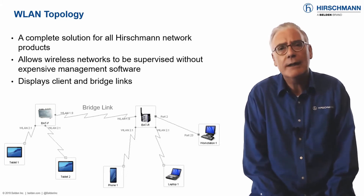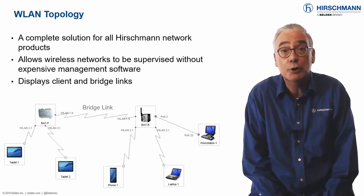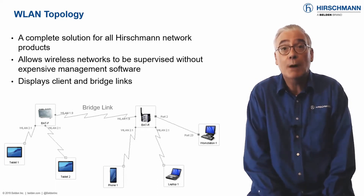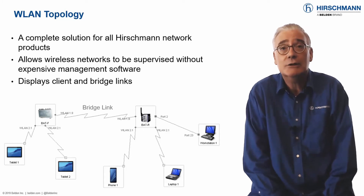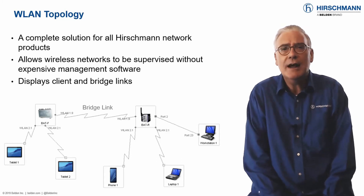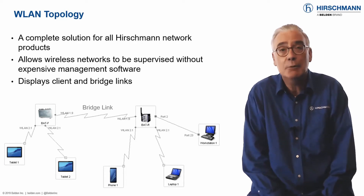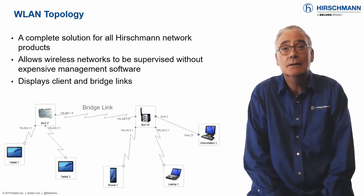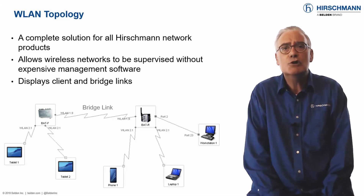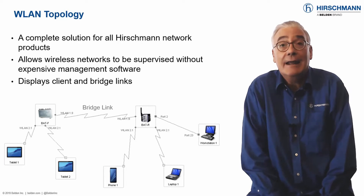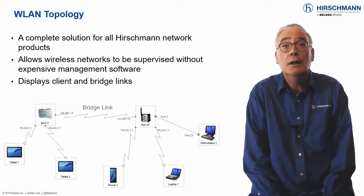Point-to-point links, also known as bridge links, behave like cables and therefore form part of the network infrastructure. Industrial HiVision uses the same display characteristics for both cabled and wireless links. So if wireless bridge links are being used as backup connections — for example in a rapid spanning tree network — they're displayed as dashed lines.